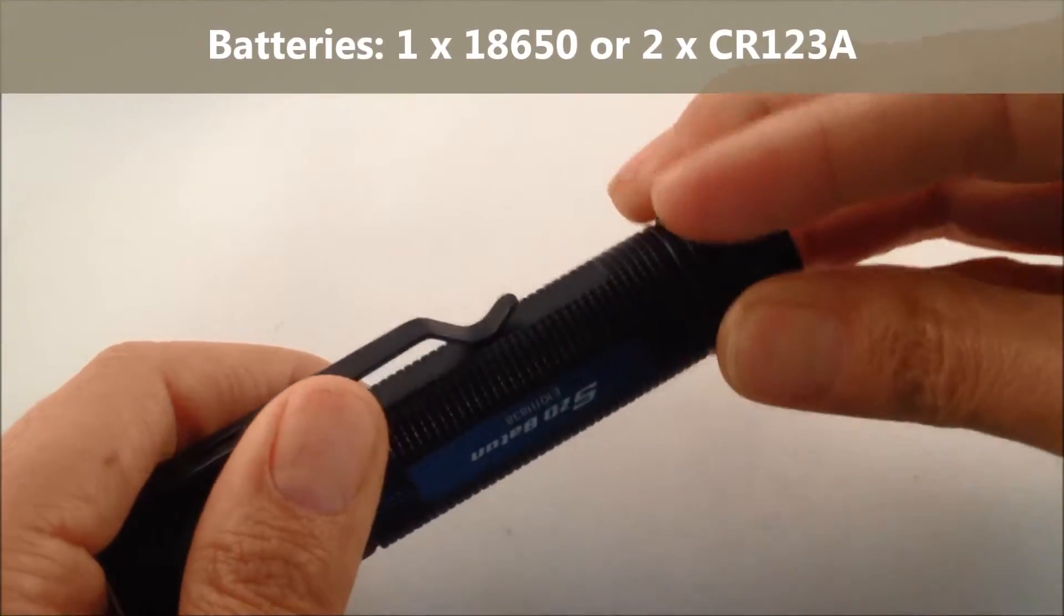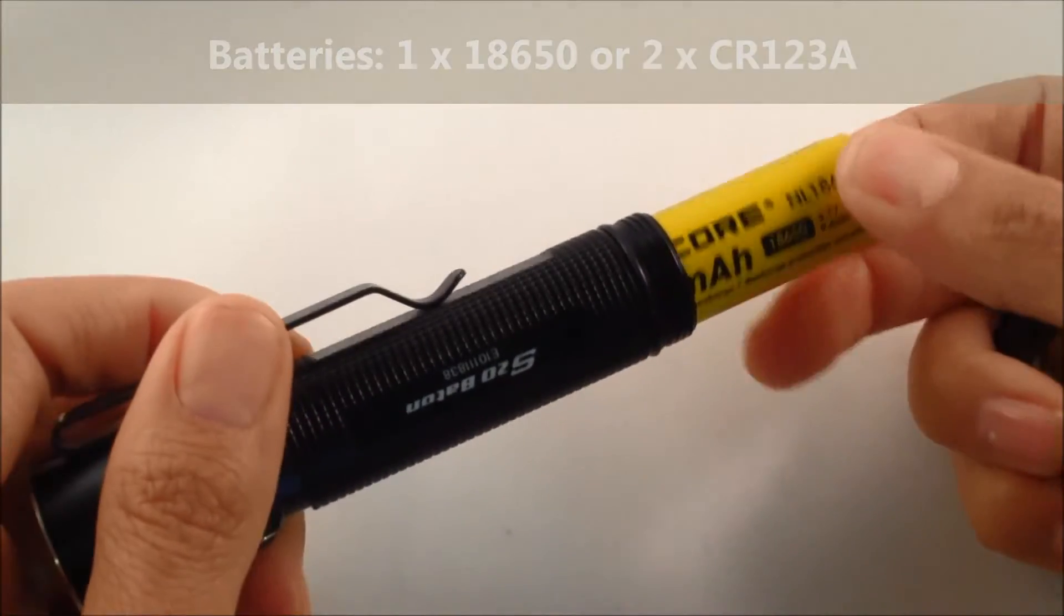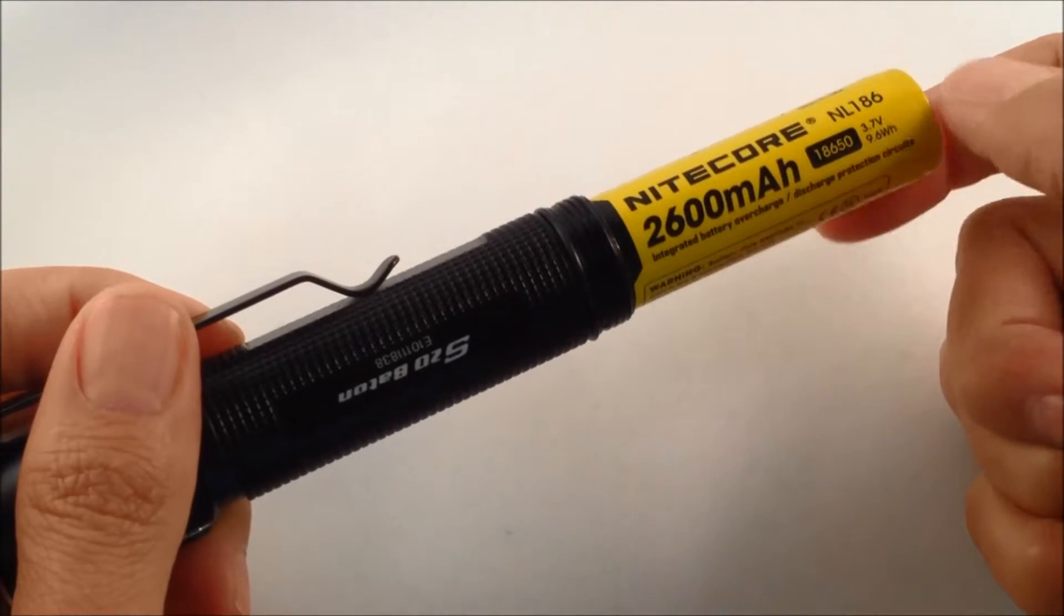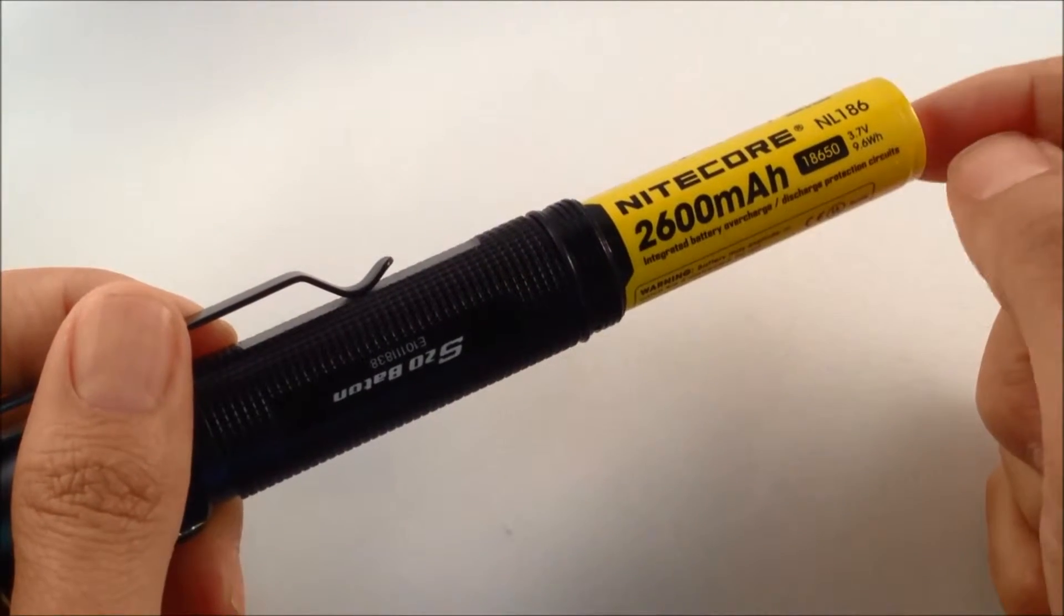Generally, when we're operating our lights, we tend, on our own personal use, to use the 18650 size batteries. We're generally using the 2600 mAh versions.